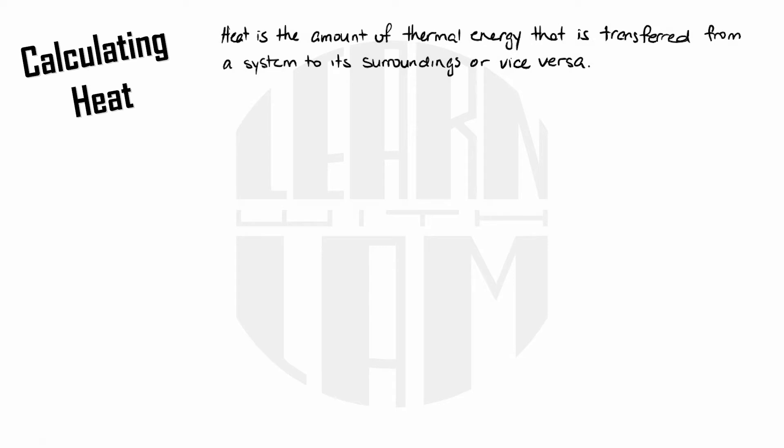We calculate heat using the equation Q equals MC delta T where Q is heat measured in joules, M is mass measured in grams, C is the specific heat capacity and its unit is joules per gram Celsius. Different substances have different specific heat capacities so we'll be looking up these values in the table. And lastly delta T is the change in temperature which we measure in degrees Celsius.